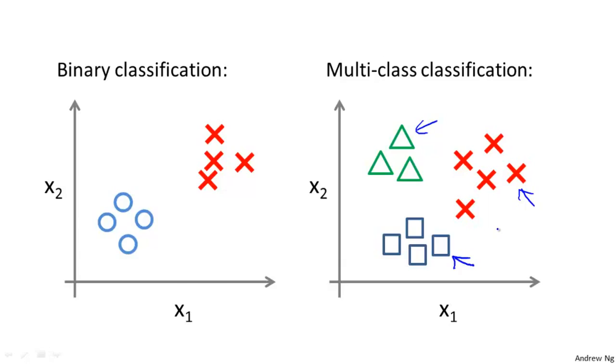We already know how to do binary classification. Using logistic regression, we know how to maybe fit a straight line to separate the positive and negative classes. Using an idea called one versus all classification, we can then take this and make it work for a multi-class classification as well.